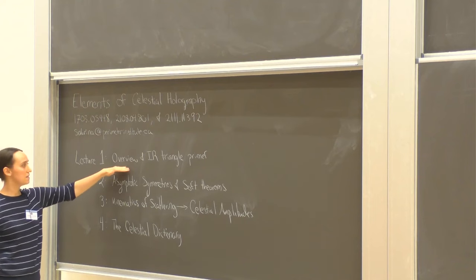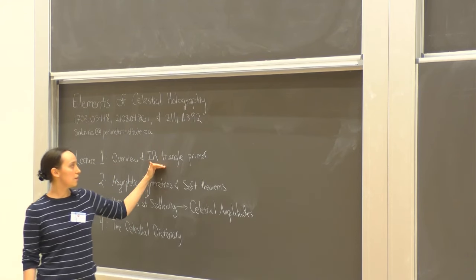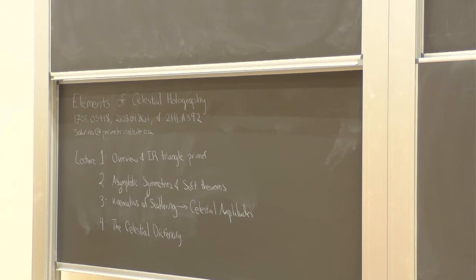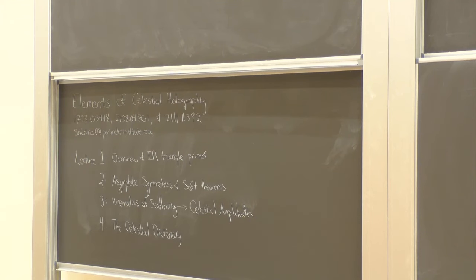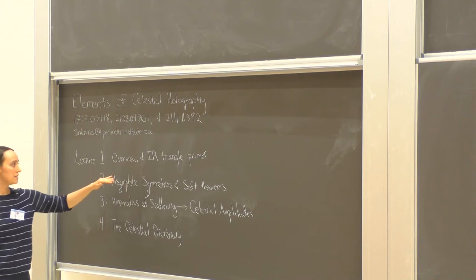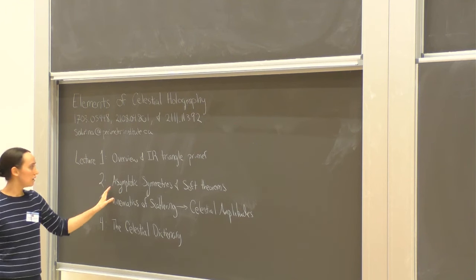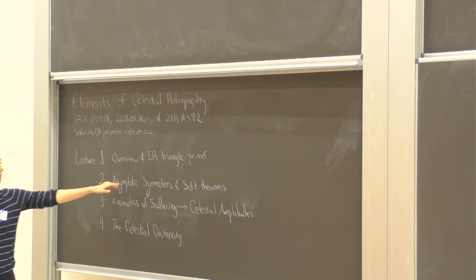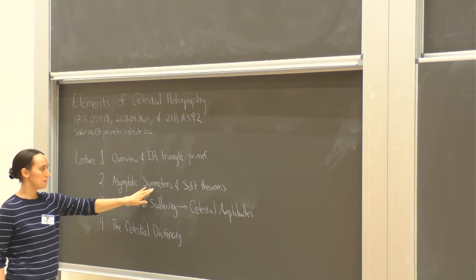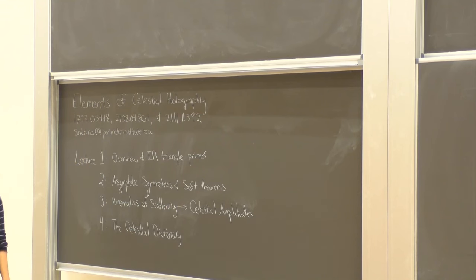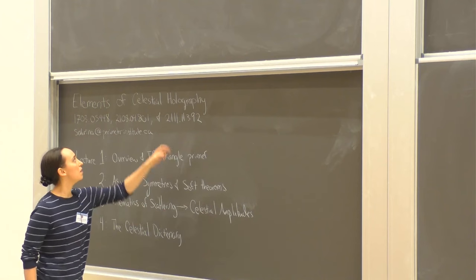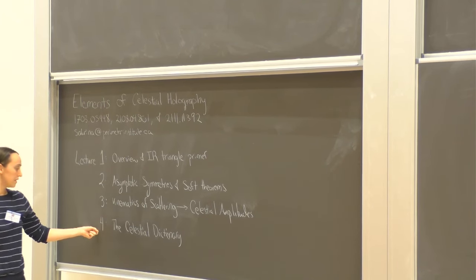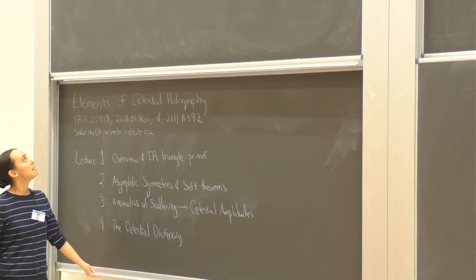The goal of the different lectures: today we just want to see the bigger picture and a little bit of the setup for the IR triangle. Tomorrow the goal will be one actual computation — showing an equivalence between asymptotic symmetries and soft theorems — and that punch line will lead to currents which will let us rearrange scattering in terms of what we're calling a celestial CFT. In the last day we'll build together the elements of that dictionary.